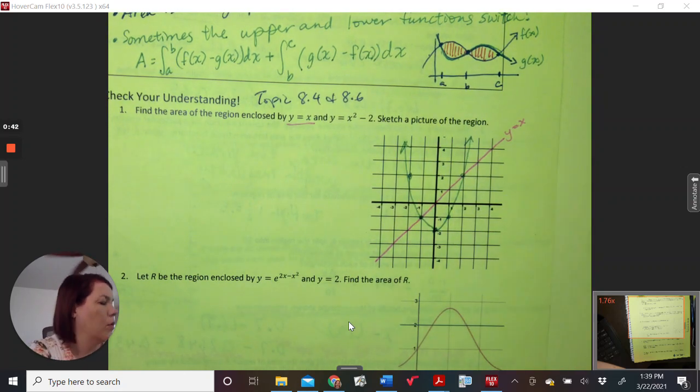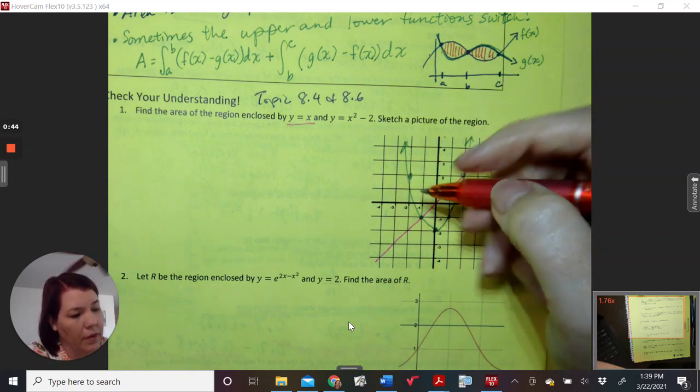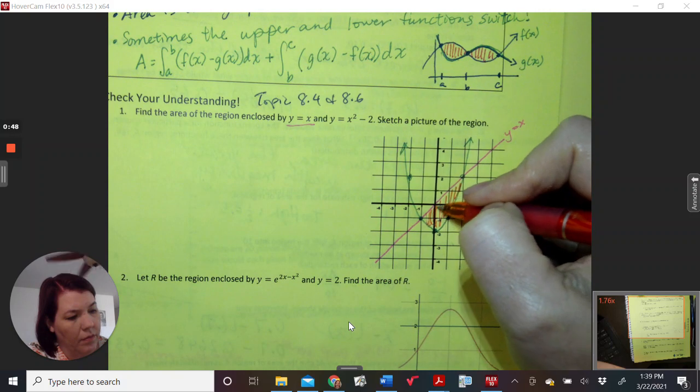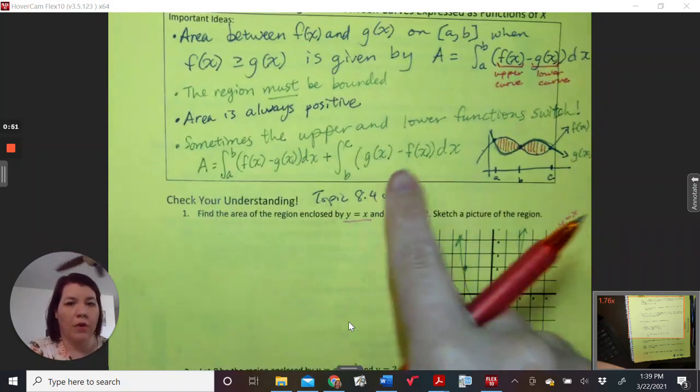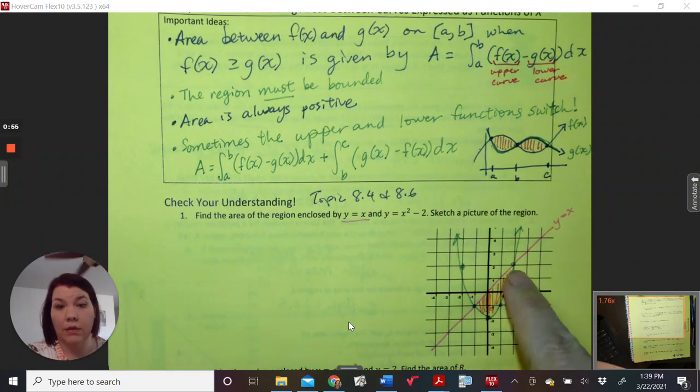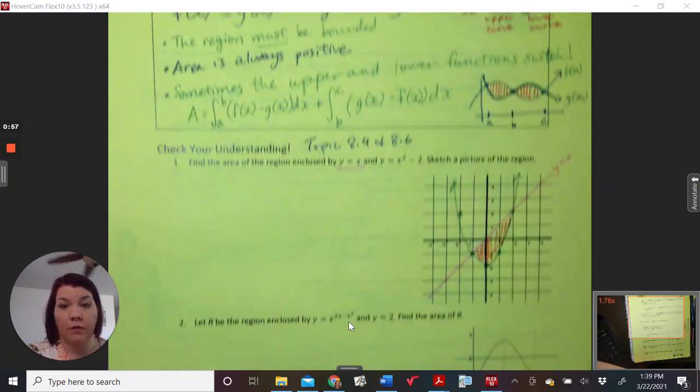And so I'm looking for this area here. So region must be bounded, which means they need to intersect on each other on both sides. We've sketched a picture of the region.